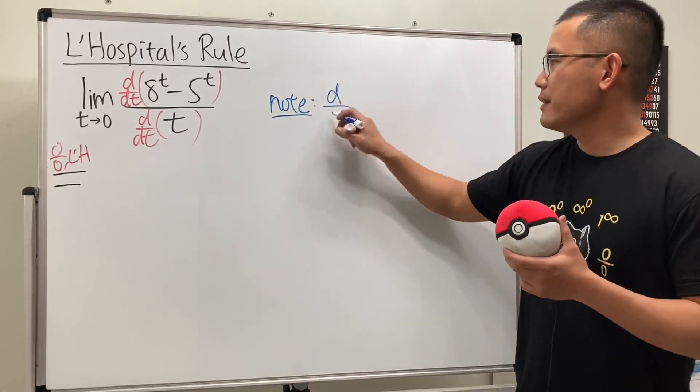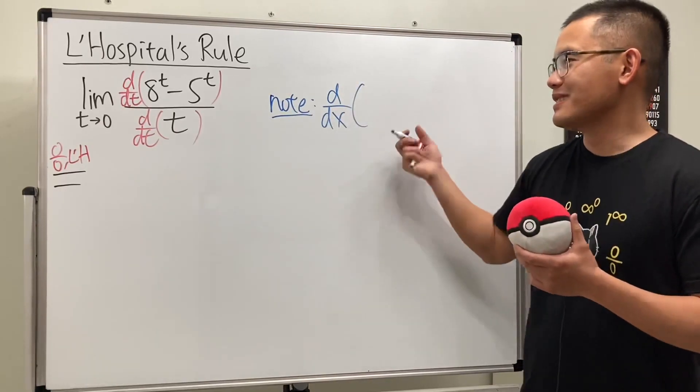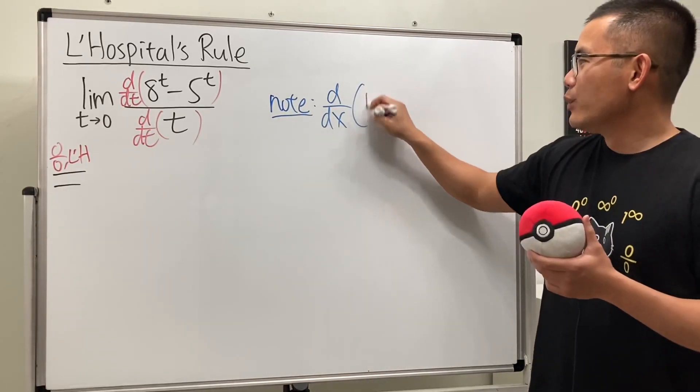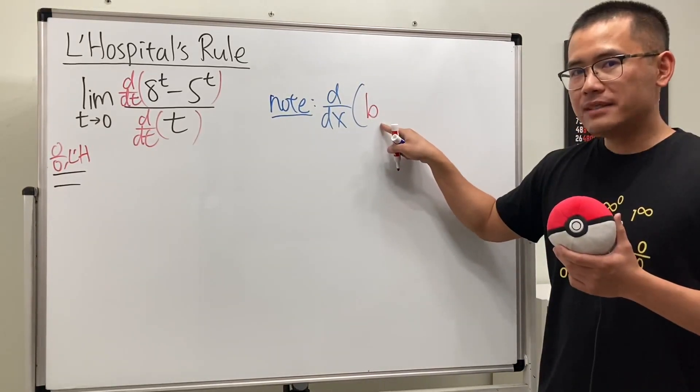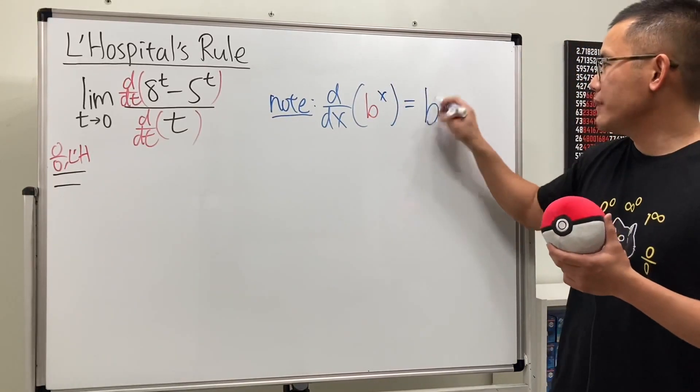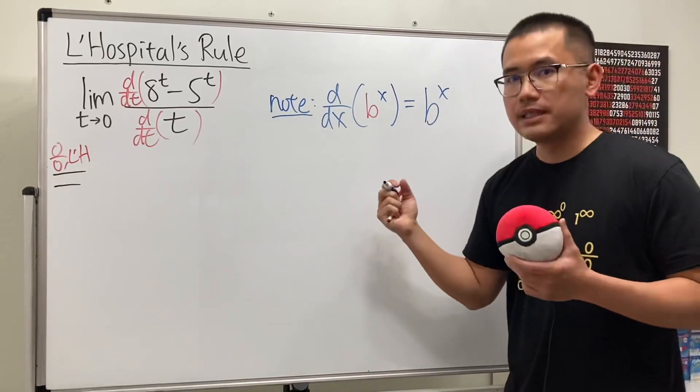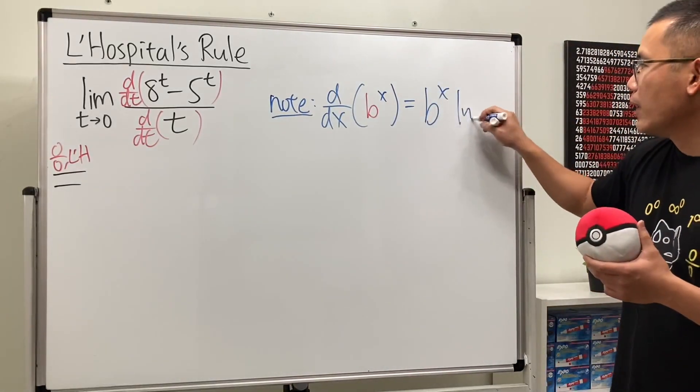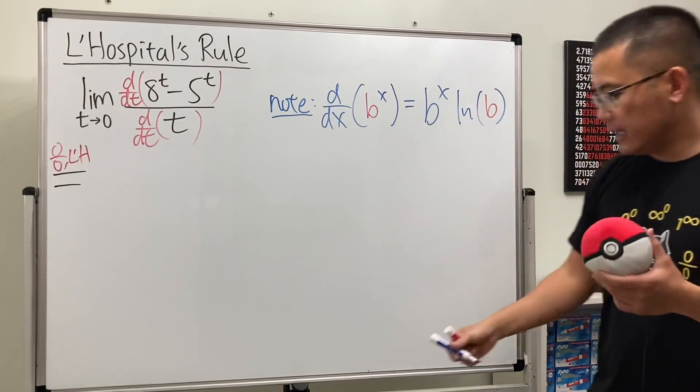Whenever we're differentiating - let me just put x because this is typical notation. When we have b for the base raised to the x power, this will give us - we repeat that. Whenever we have exponential like this, it repeats, and then we multiply by ln of the base like this.